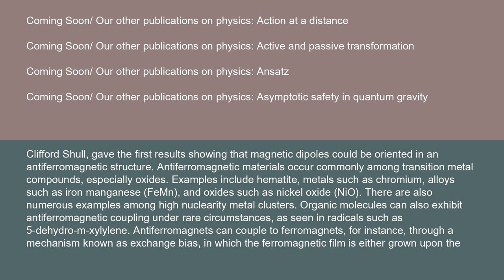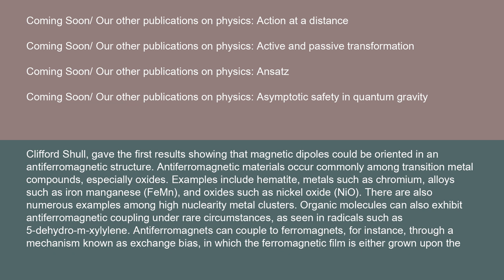Antiferromagnets can couple to ferromagnets through a mechanism known as exchange bias, in which the ferromagnetic film is either grown upon the antiferromagnet or annealed in an aligning magnetic field, causing the surface atoms of the ferromagnet to align with the surface atoms of the antiferromagnet. This provides the ability to pin the orientation of a ferromagnetic film, which provides one of the main uses in so-called spin valves, which are the basis of magnetic sensors including modern hard disk drive read heads.